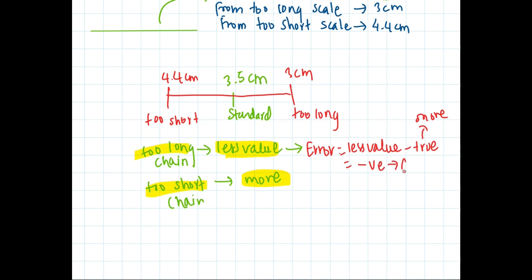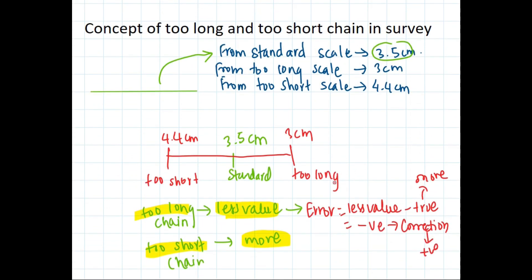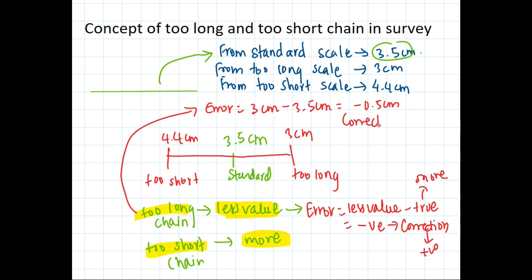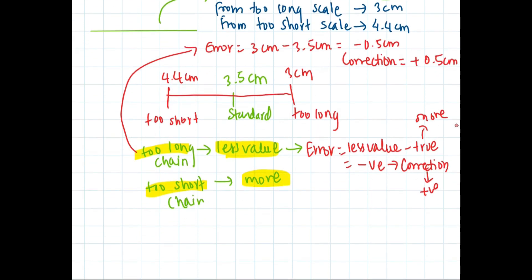Since error is negative, correction is positive. In the too long scale case above: the too long scale gave us 3 cm, the true (standard) value is 3.5 cm, so error is 3 minus 3.5 = minus 0.5 centimeter, and the correction needed is plus 0.5 centimeter.